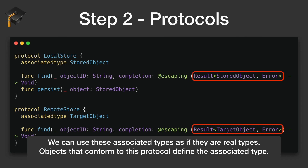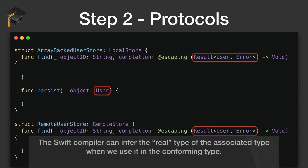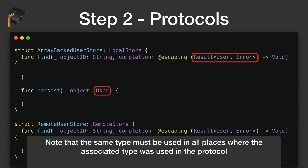How do we implement these protocols? We define a struct for the array-backed user store, which is the local version, or a remote user store. We're using Result<User> here — and the Swift compiler understands that when we do this, what we really mean is that instead of having TargetObject or StoredObject, we are using User as a concrete type. Note that the same type must be used throughout — once we determine that StoredObject is a User, it has to forever be a User. So both persist and find must use the same type.